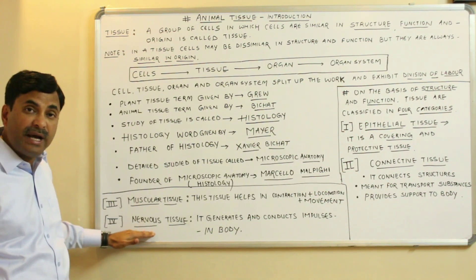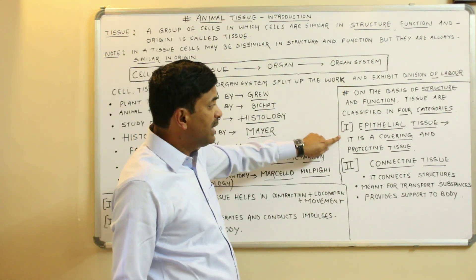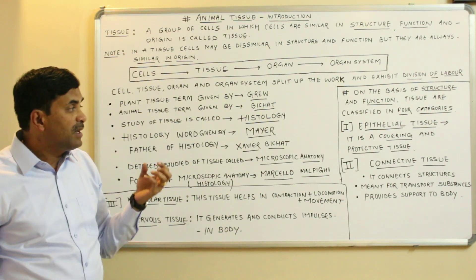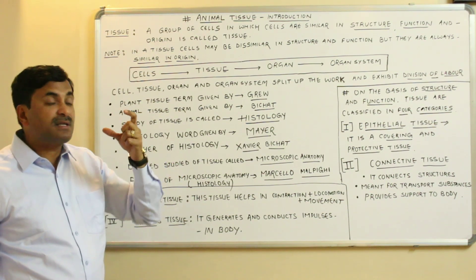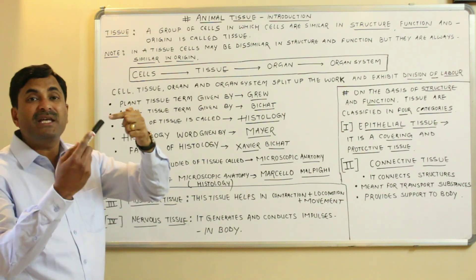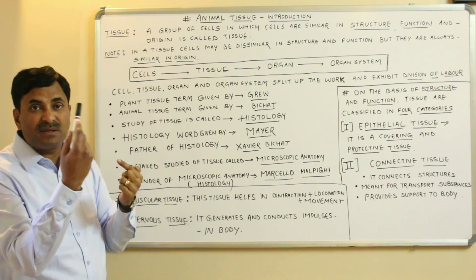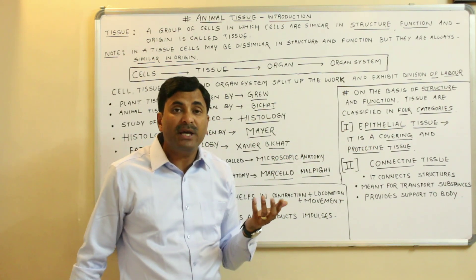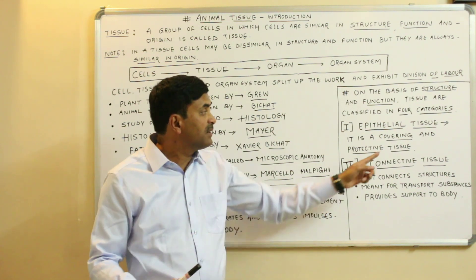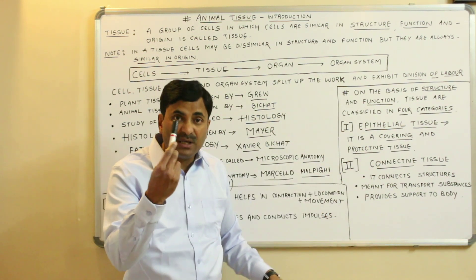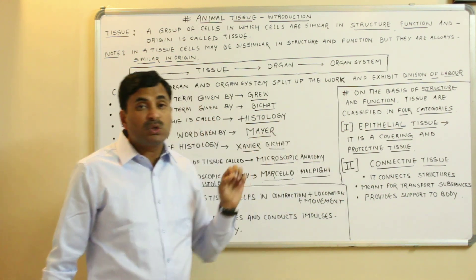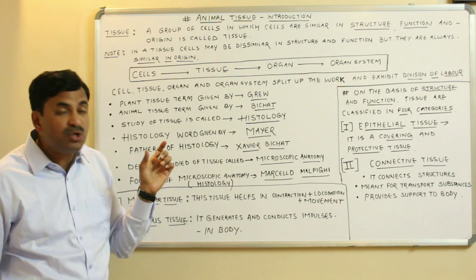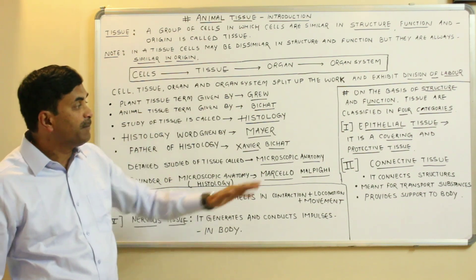Epithelial tissue — as the name indicates, it is the tissue which lines many areas in our body. It lines many organs, so it is called a covering tissue. It also protects many organs, so it is called a protective tissue. The prime function of epithelial tissue is that it is both a covering tissue and a protective tissue.